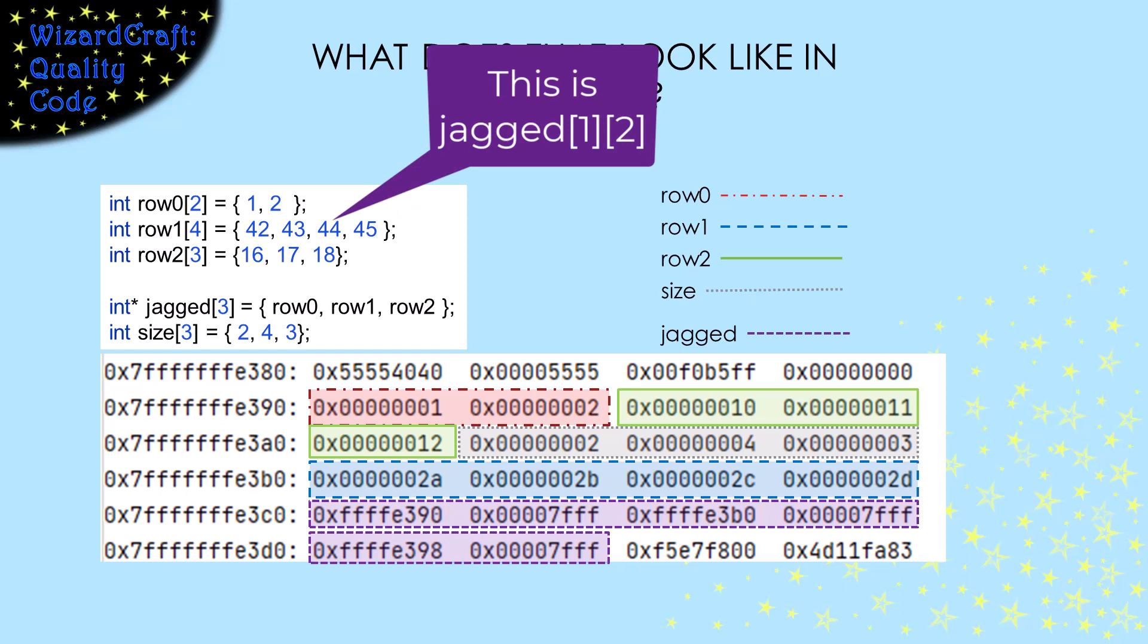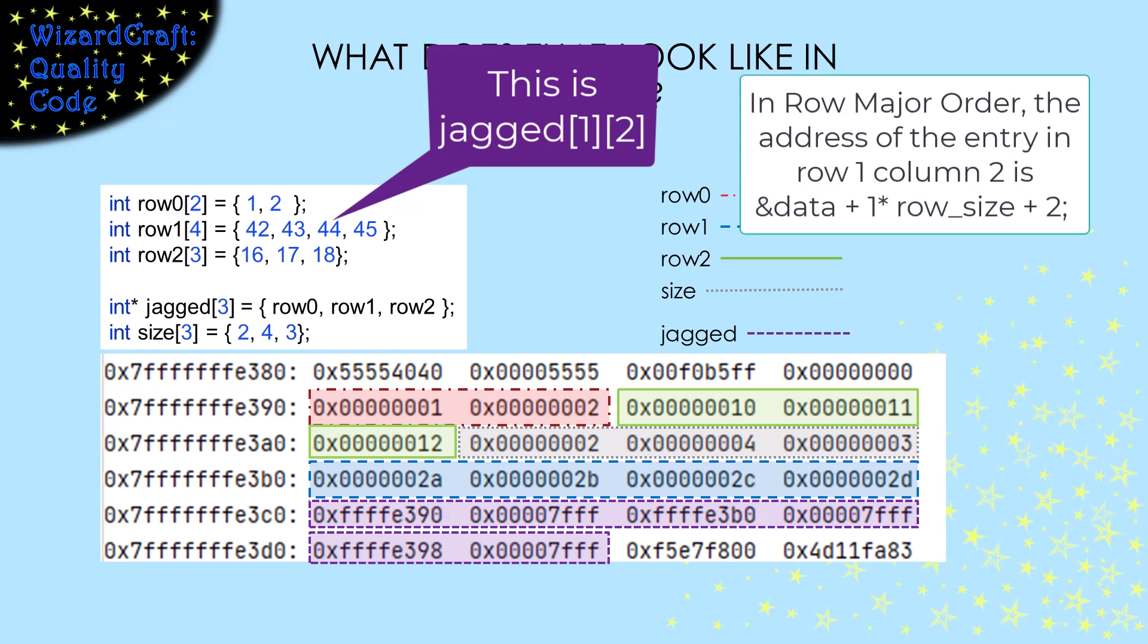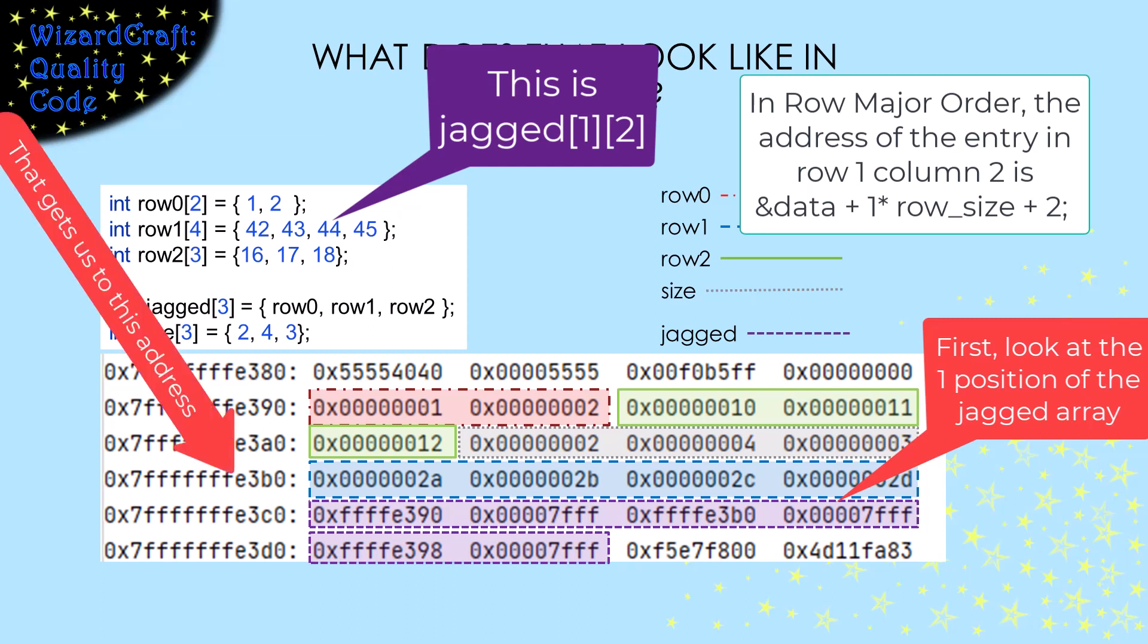Remember, with a rectangular array, it was stored in row-major order, and the location of one entry was the base value plus a function of the row and column indices. For jagged arrays, the compiler has to index the array of arrays to get the start of the row, and then add the column number to get that location. So the code the compiler generates for indexing rectangular and jagged arrays is very different, even though the syntax we use is the same.